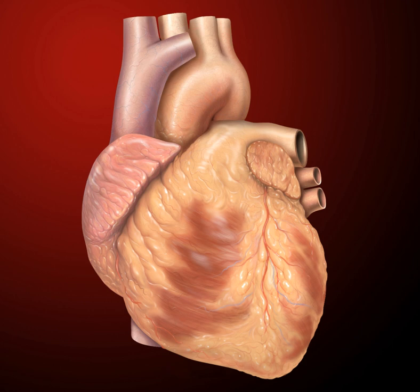Because the heart is between the lungs, the left lung is smaller than the right lung and has a cardiac notch in its border to accommodate the heart. The heart is cone-shaped, with its base positioned upwards and tapering down to the apex.